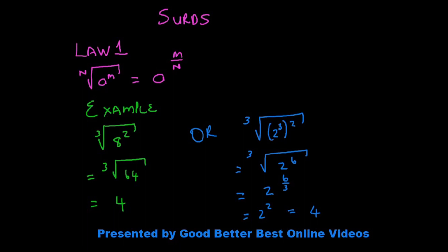This means when I need to find the cube root of 8 squared, 8 squared is 64, and the cube root of that is 4. Or we can say the cube root of 2 to the power 3, squared. 2 to the power 3 to the power 2 — a power to a power means we multiply, and 3 times 2 is 6. So that gives me 2 to the power 6. Applying this rule, that is 2 to the power 6 divided by 3, which is 2 to the power 2, giving the same answer of 4.